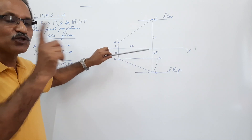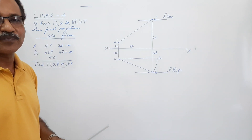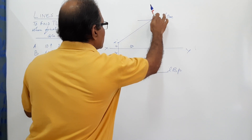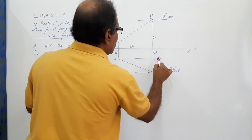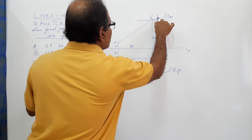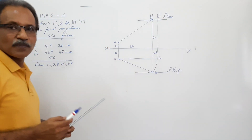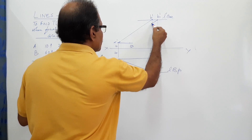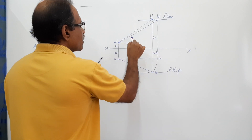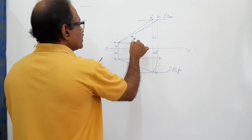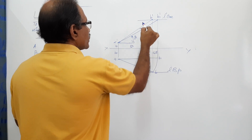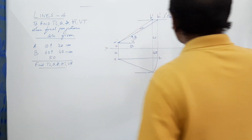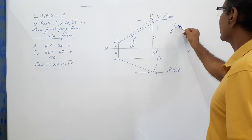The plan is now parallel to XY. What does it mean? The actual line is parallel to the horizontal plane. Project b1 up to XY - what do you get? You get b1-dash. A-dash b1-dash is the true length. This angle is theta and this is the true line. So you have found out the true length and theta.